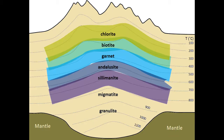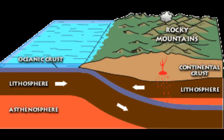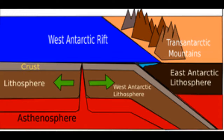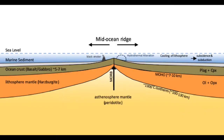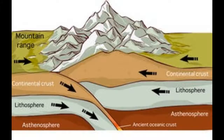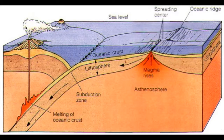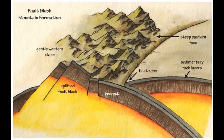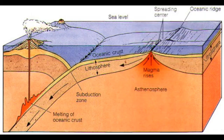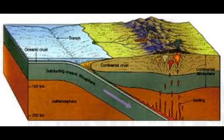Block mountains: when a fault block is raised or tilted, block mountains can result. Higher blocks are called horsts and troughs are called grabens. The spreading apart of surface causes tensional forces. When the tensional forces are strong enough to cause a plate to split apart, it does so.